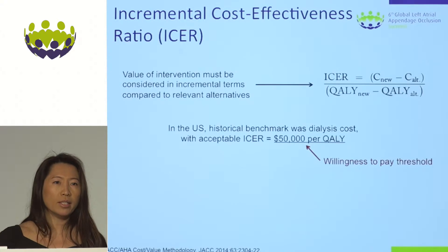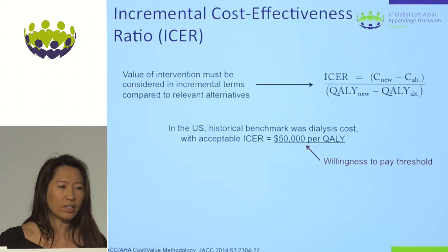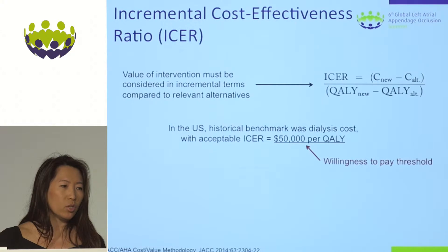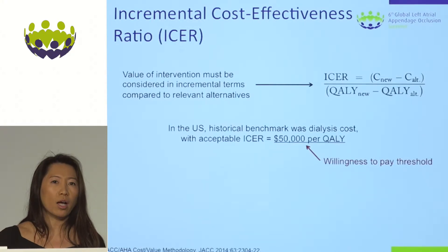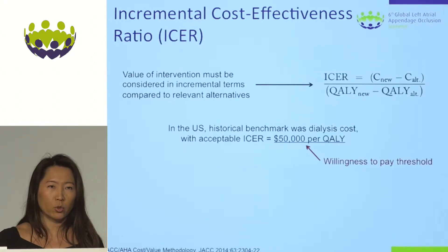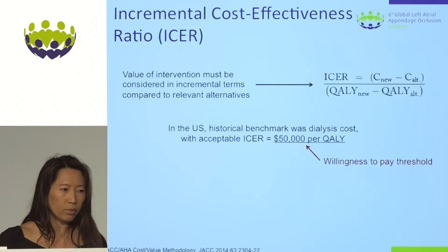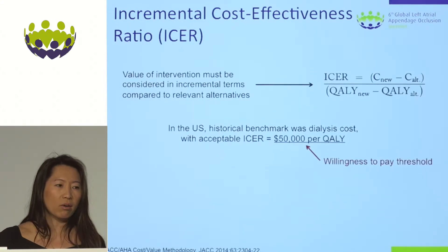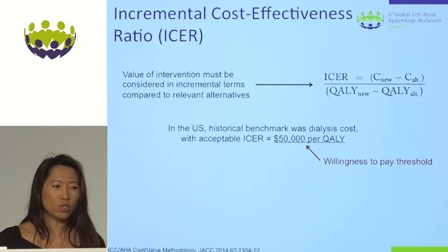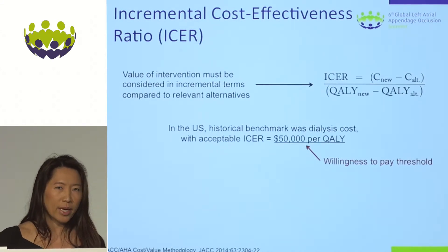A very important concept is the incremental cost-effectiveness ratio, or ICER. This essentially looks at the incremental cost of a new therapy compared to a standard therapy — for instance, comparing the cost of LA closure versus warfarin. Historically, we've utilized $50,000 per QALY as a willingness-to-pay threshold, because that was the benchmark for the cost of dialysis in the United States.